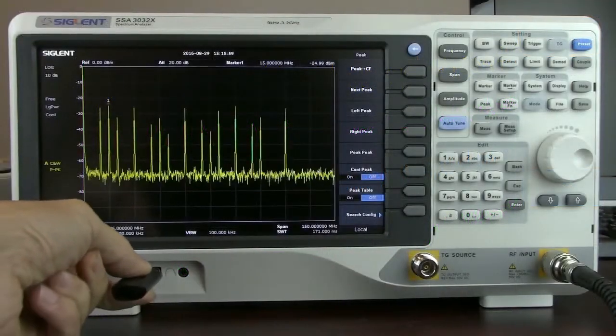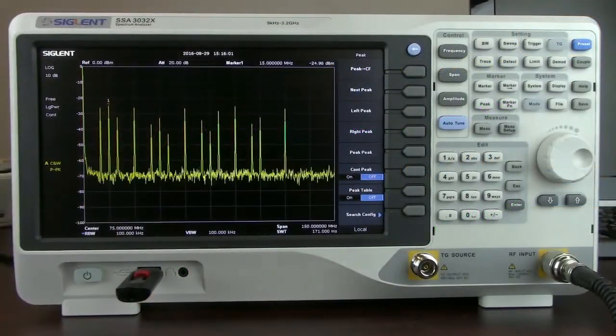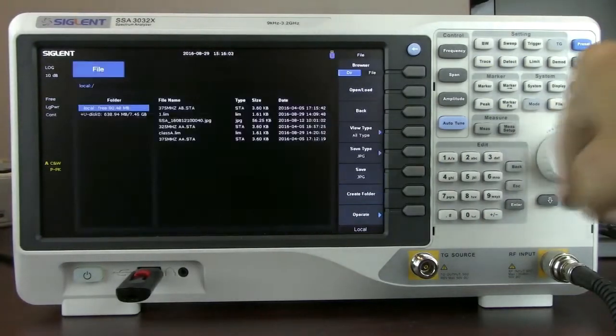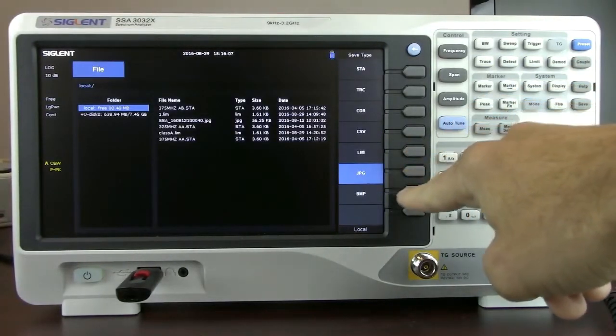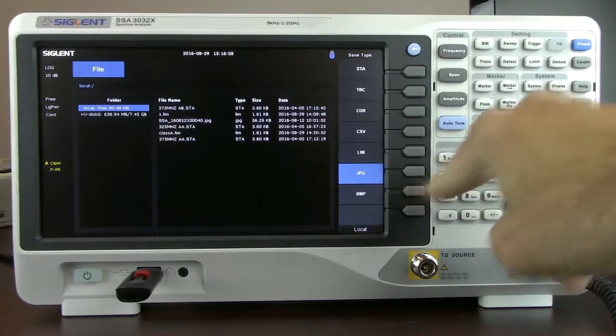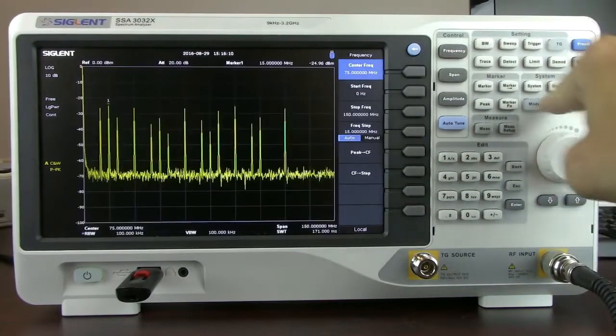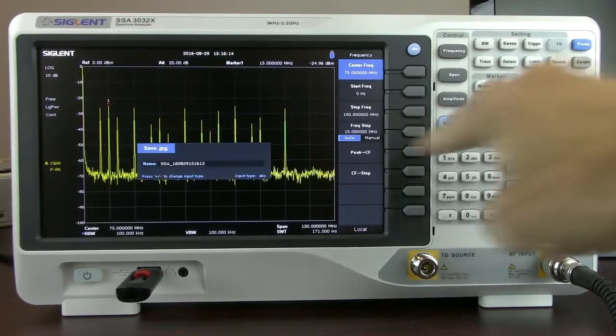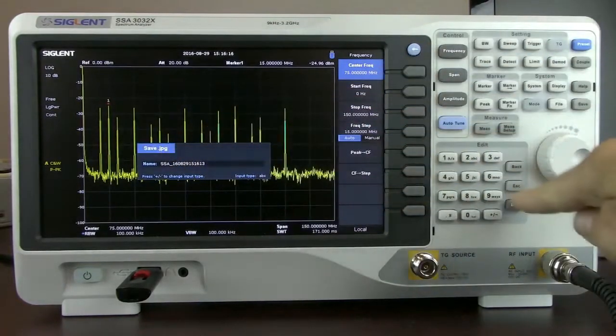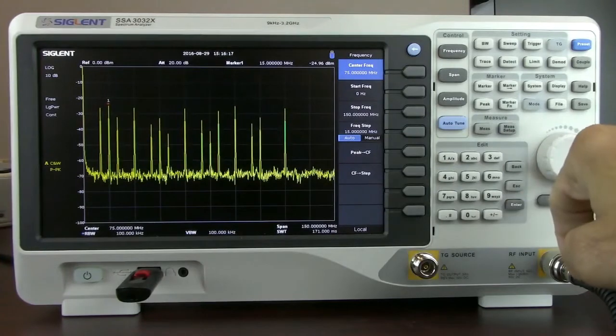And now we're going to take a look at the save feature. We're going to insert a USB stick and press file and now you'll see that the save type has a number of formats. We can also have JPEG and bitmap and those are going to be mapped directly to the save key. Every time we press the save key it's going to open up a file dialog save as JPEG and now we press enter to save to the USB stick which is indicated here.